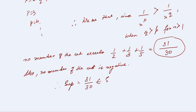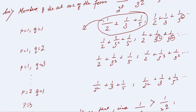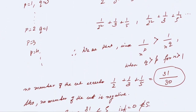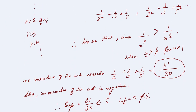Also, no member of the set is negative. Therefore, the supremum is equal to 31 by 30 and this exists in the set S, and the infimum is equal to 0 and this does not exist in the set S. Thank you for watching students, I'll see you in the next video.